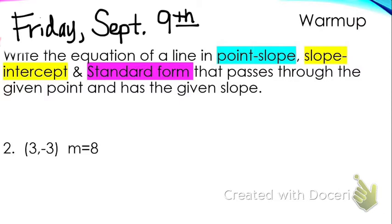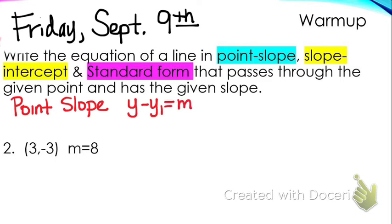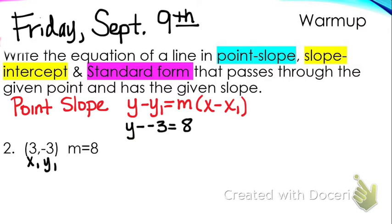The easiest one to start off with is point-slope. In order to write an equation in point-slope form, point-slope is y minus y1 equals m parentheses x minus x1. So we have a point — this is my x1 and my y1 — and we have the slope. We're just going to substitute it in, so it would be y minus y1, which is negative 3, equals m times x minus 3.